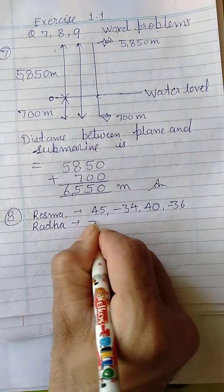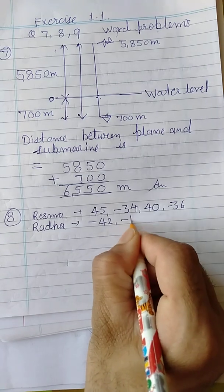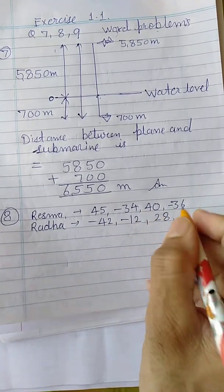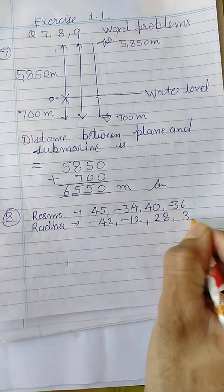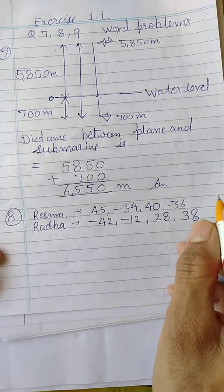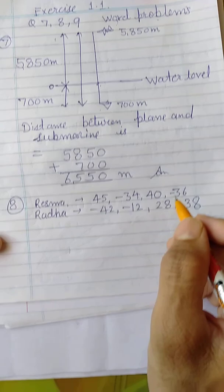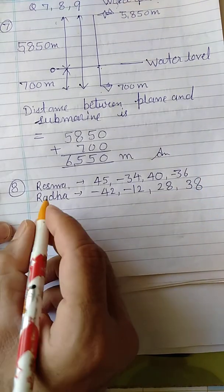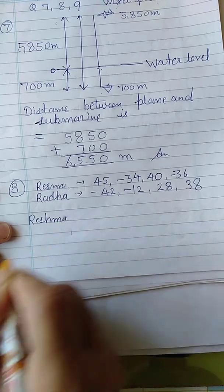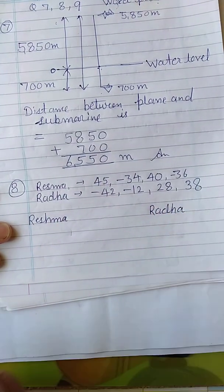Radha scored minus 42 in first round, minus 12 in second round, plus 28 in third round, and 38 in fourth round. Question is, who scored more marks? Now in this one, what to do? Just find the sum of both. How to find sum? For Reshma, I'm writing here. And for Radha, I will write here.